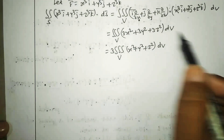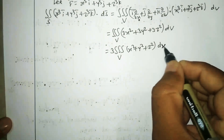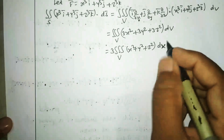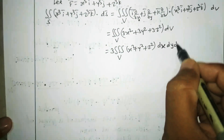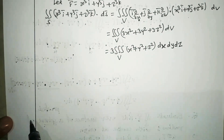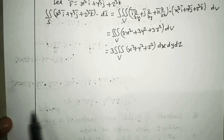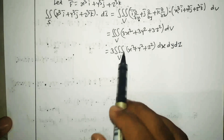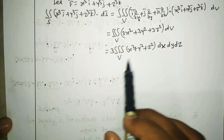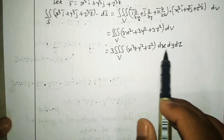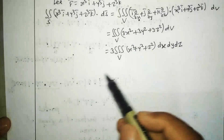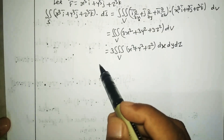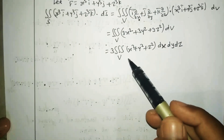The volume element dV can be written as dx·dy·dz. So we need to evaluate 3 times the triple integral over volume V of (x² + y² + z²) dx dy dz. To evaluate this triple integral we need to find the limits.